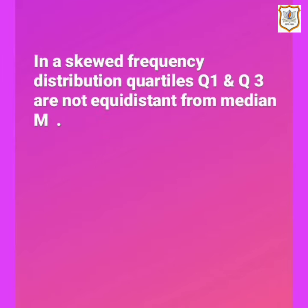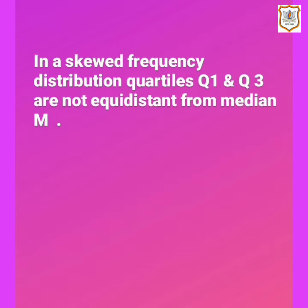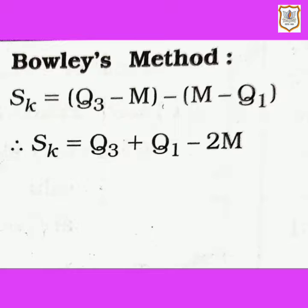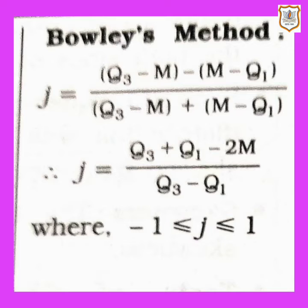In a skewed frequency distribution, quartiles Q1 and Q3 are not equidistant from median M, so skewness is taken out with the formula: skewness equals Q3 minus M minus (M minus Q1), which simplifies to skewness equals Q3 plus Q1 minus 2M. This is how skewness is found using Bowley's method.